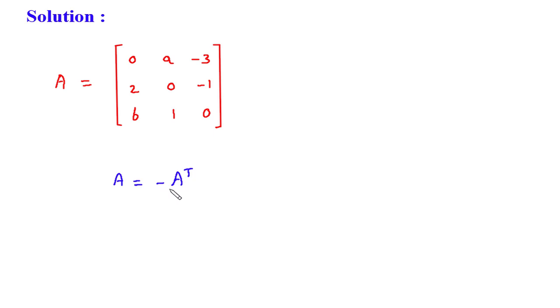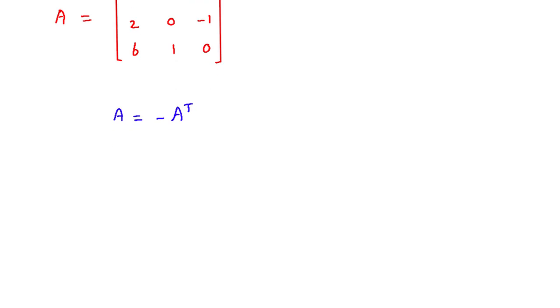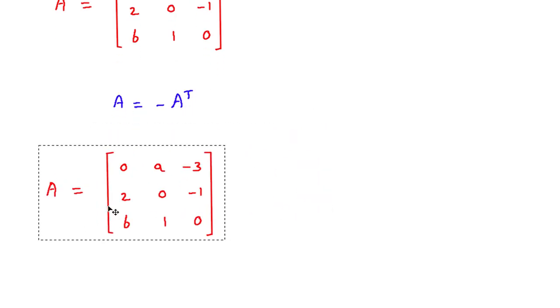So we have to find negative of A transpose, so first we will find its transpose. Its transpose will be A is equal to minus of A transpose. Now its transpose will be, we have to convert all the rows into columns. So here we can see this is the first row, so this will be first column.